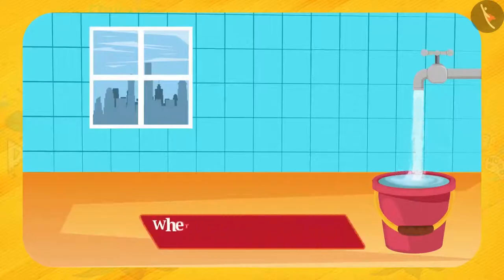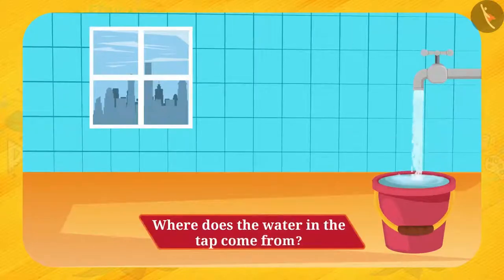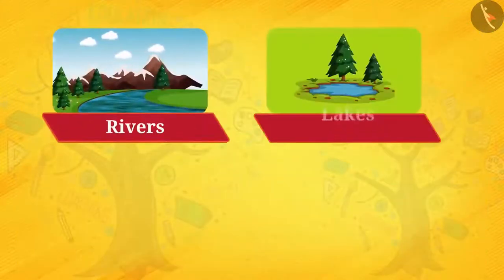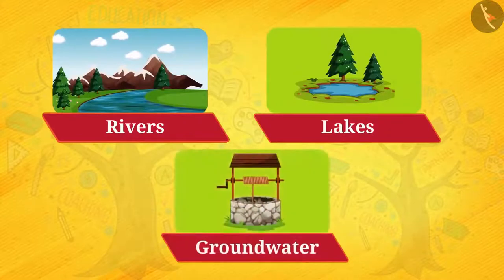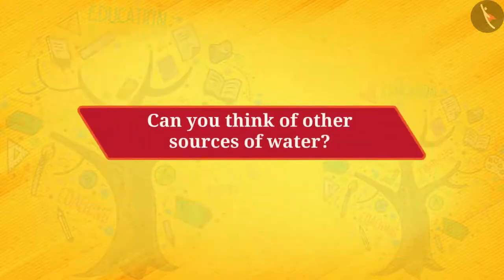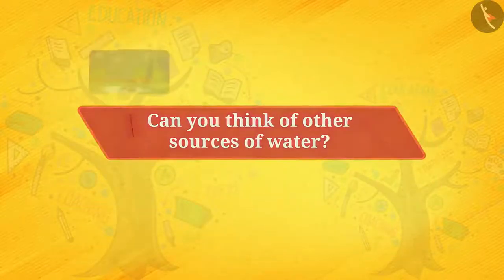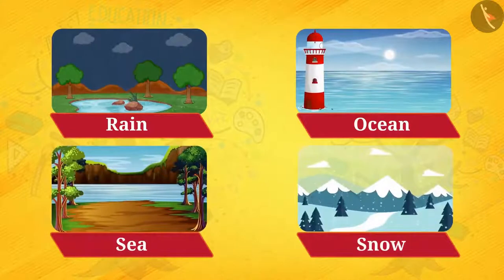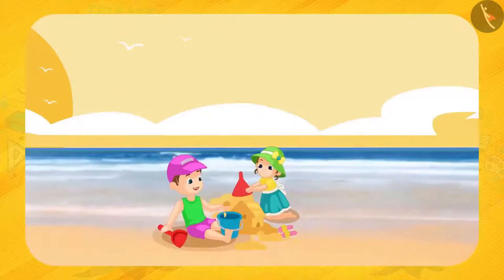But where does the water in the tap come from? Think! Water is drawn into the tap from nearby rivers, lakes, and groundwater. So these are the sources of water. Can you think of other sources of water? They are rain, ocean, sea, and mountains covered with snow.